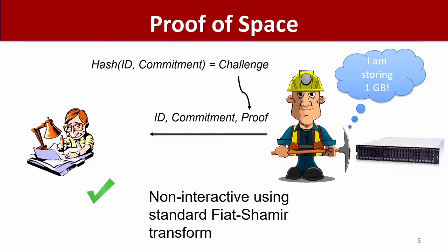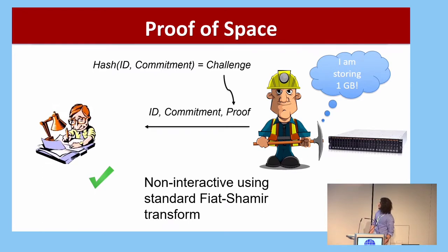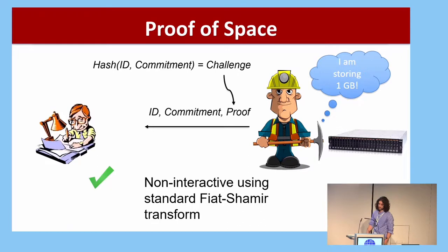There's also a non-interactive version: any proof of space protocol is by definition public coin, so the Fiat-Shamir heuristic can be applied to get a non-interactive version, where the challenge is derived as a hash of the prover's commitment.